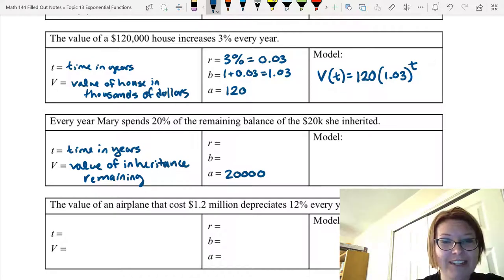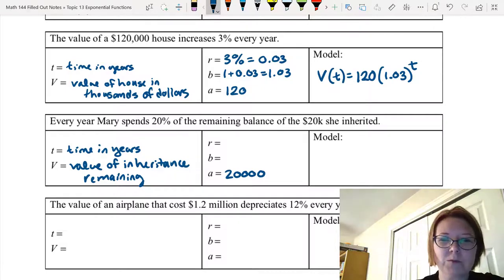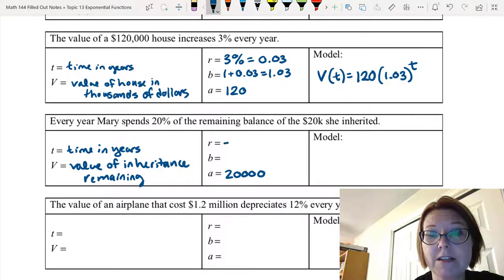I tend to like the smaller numbers because they're easier to graph in Desmos. So you don't get so much decimal round off error and things like that. So these are probably better if you do define them in thousands or millions or whatever you need to. The rate here, she's spending 20% a year. So that's a minus 20%. And as a decimal, that would be minus 0.20.